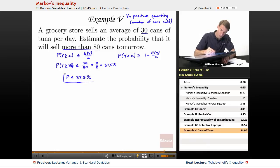So, if you're a store manager and maybe you've got 80 cans of tuna in stock, you're worried about whether you're going to sell out tomorrow, the probability that you're going to sell all 80 of those cans is at most 37.5%. You don't know exactly what the probability is because Markov's inequality never tells you an exact value, but it tells you that it's less than or equal to 37.5%.